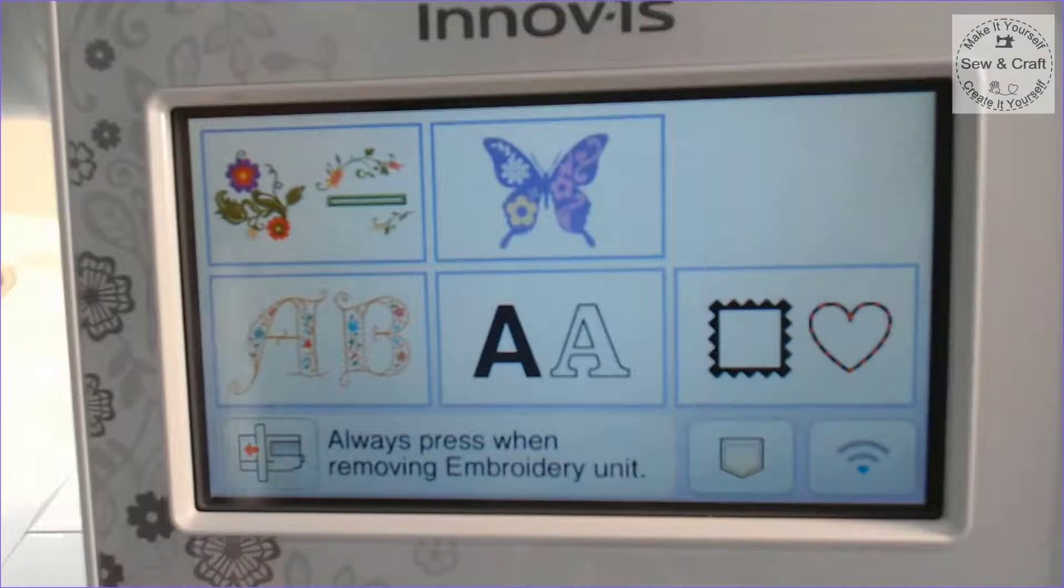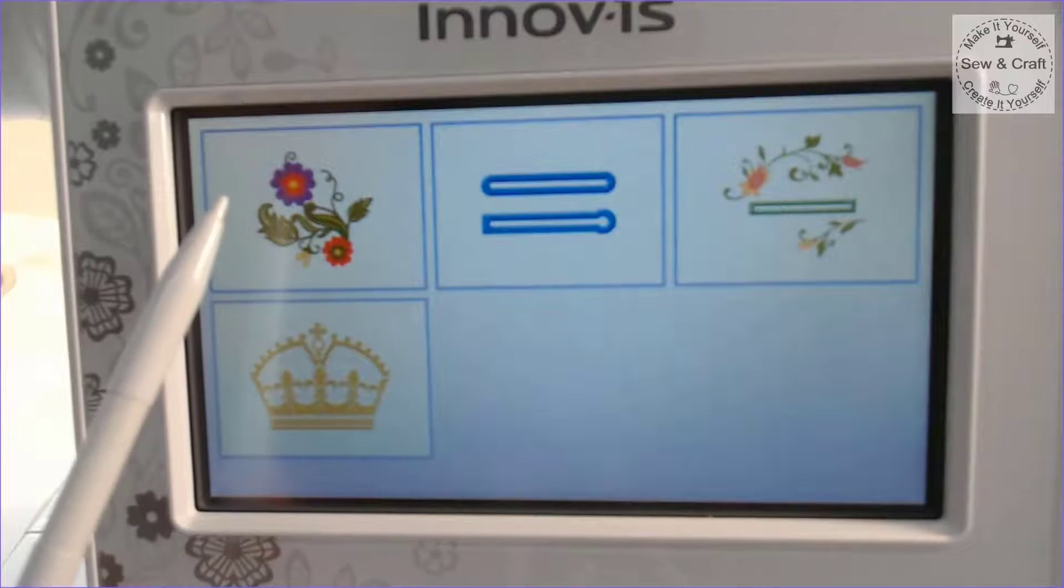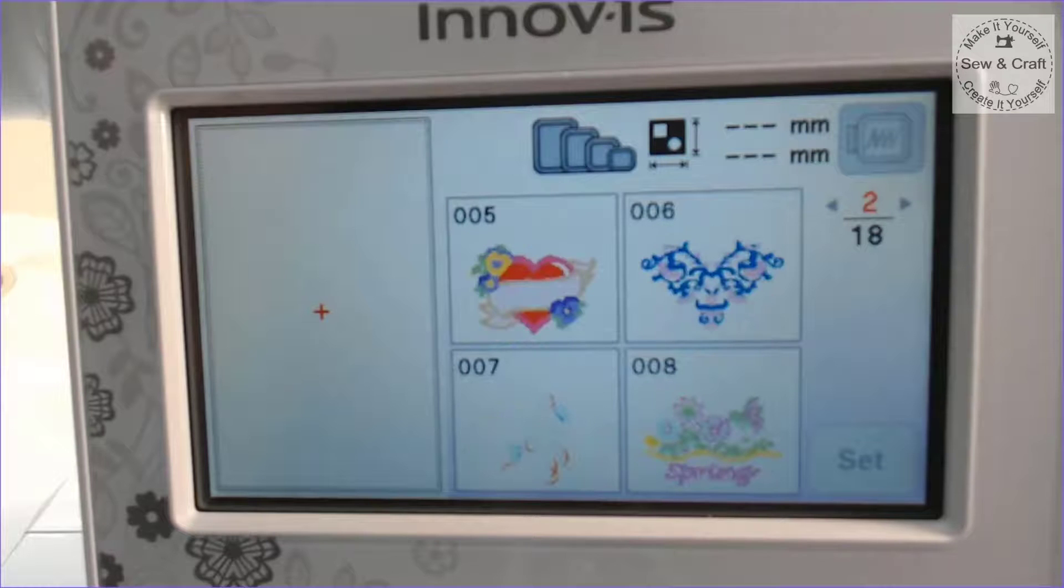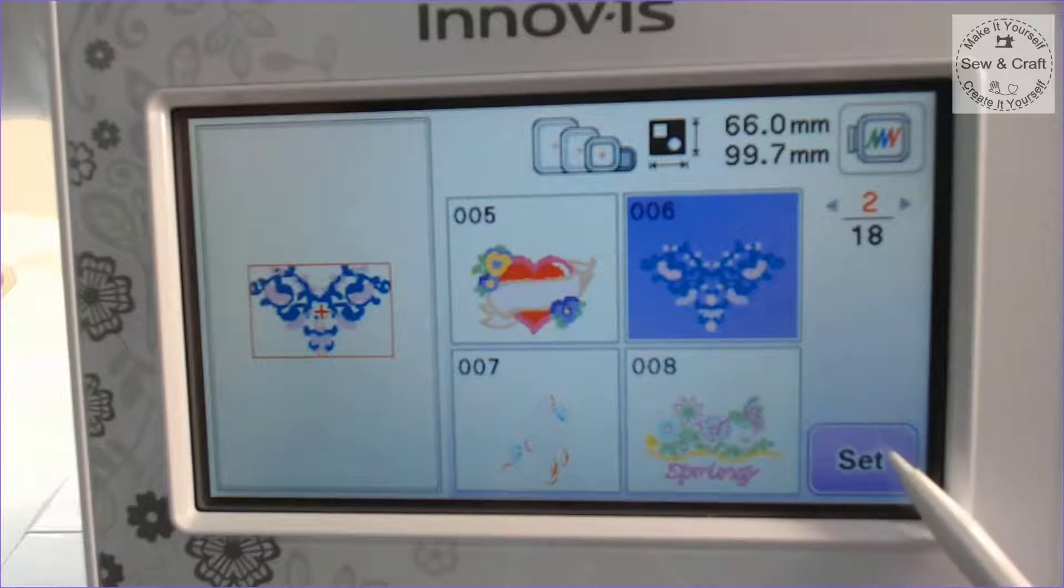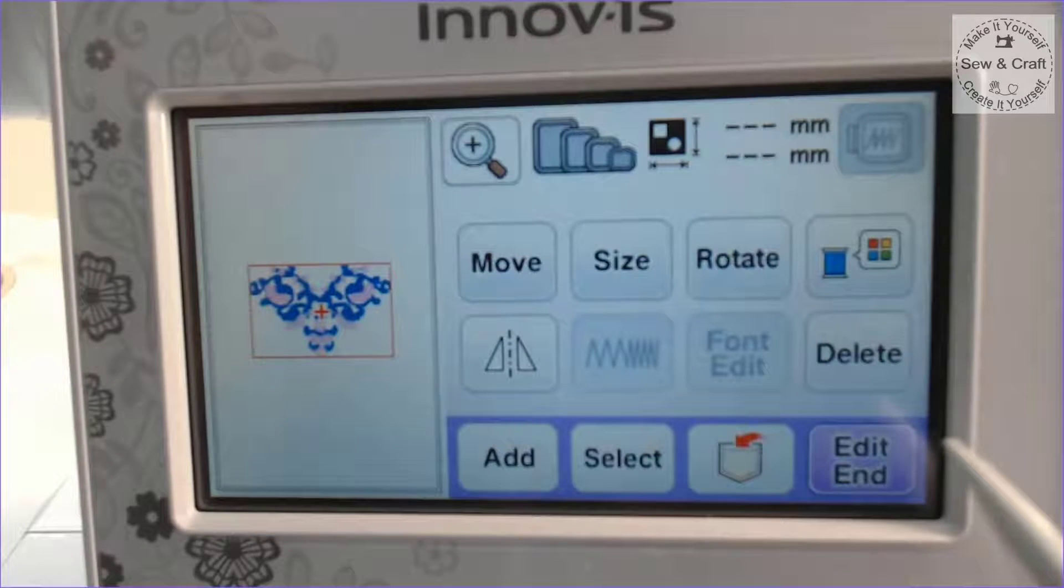So let's select a design to embroider. I'm going to go to category 1, then subcategory 1, and I know the design I want is number 6, so I'll scroll through until I get to number 6 and select it. Once I've selected it I click set and it takes me through to my editing screen.